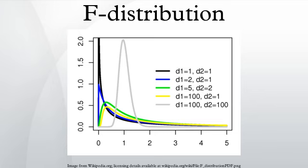A random variate of the F-distribution with parameters d1 and d2 arises as the ratio of two appropriately scaled chi-squared variates, where U1 and U2 have chi-squared distributions with d1 and d2 degrees of freedom respectively, and U1 and U2 are independent.